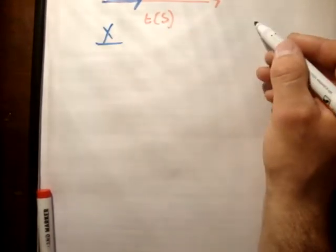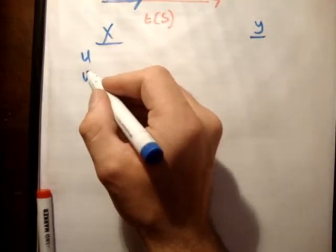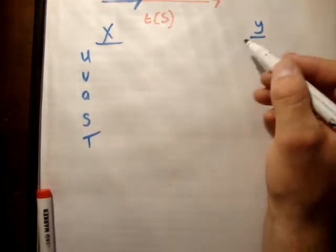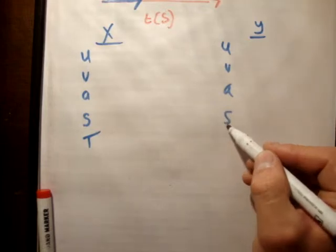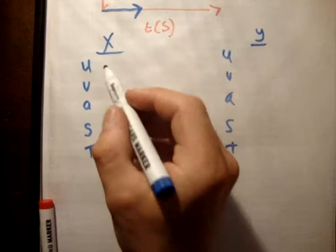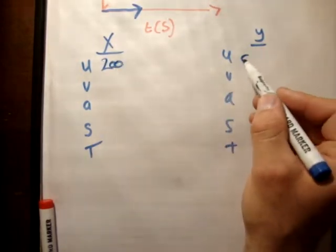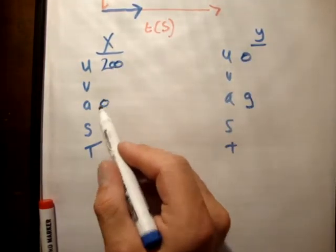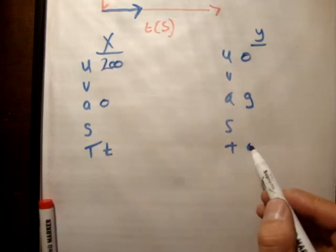Alright? So the next thing we do is our UVAST. What do we know? We know the initial velocity. U sub X is equal to 200. This is equal to 0. This is G as normal. And this is 0 as normal.